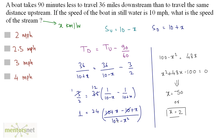Solving this gives a quadratic equation with two values of x: minus 50 and 2. Since speed cannot be negative, we ignore minus 50 and take x equals 2. So the speed of the stream is 2 kilometers per hour — option A is the correct answer.